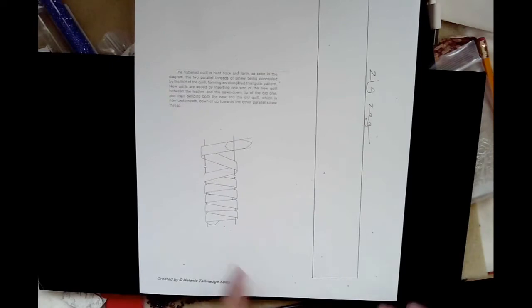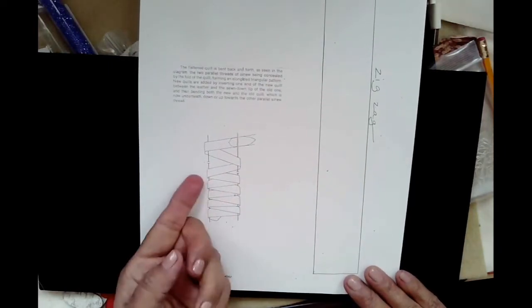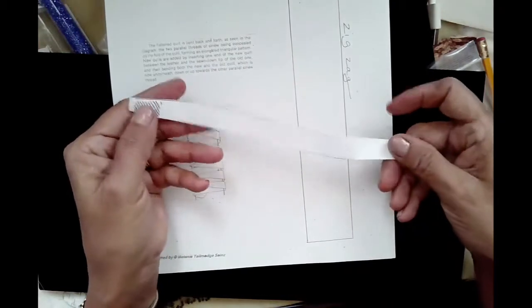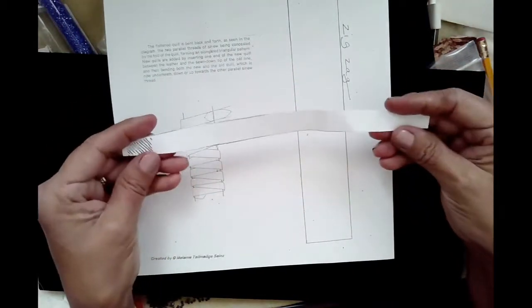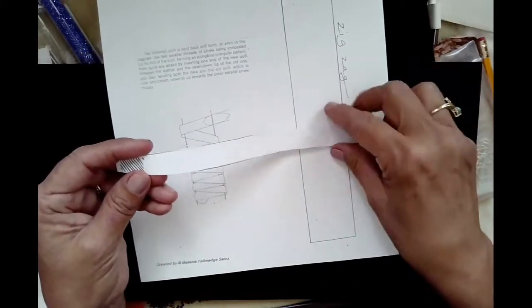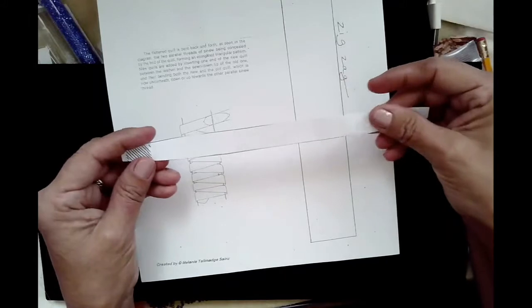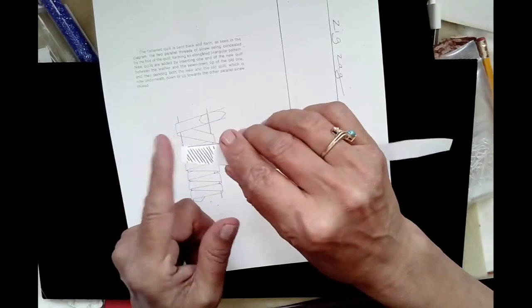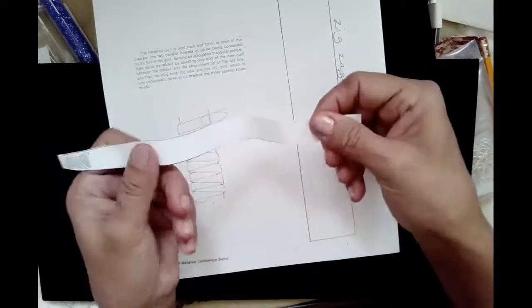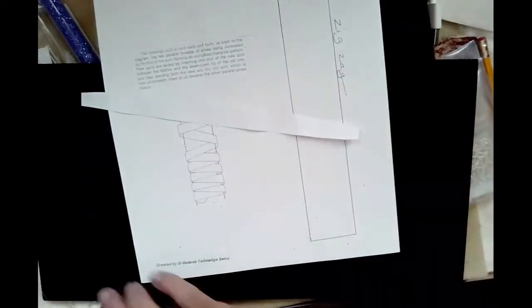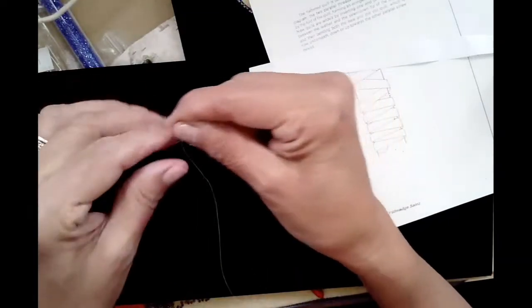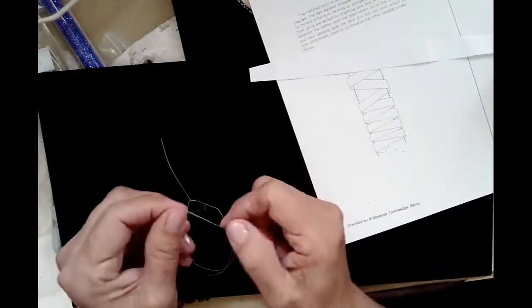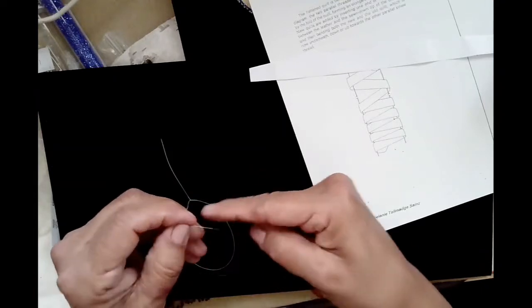We're going to do the zigzag method. When you do the zigzag method, basically what you're doing is you're folding over and tacking down the quill. I'm going to pretend that this piece of paper is a gigantic porcupine quill. Let's say this is a porcupine quill. I've already cut off the tip here, which is the sharp part that's barbed that gets stuck in your hand if you're not careful. I've cut that off and I've soaked it in water so it's real pliable.